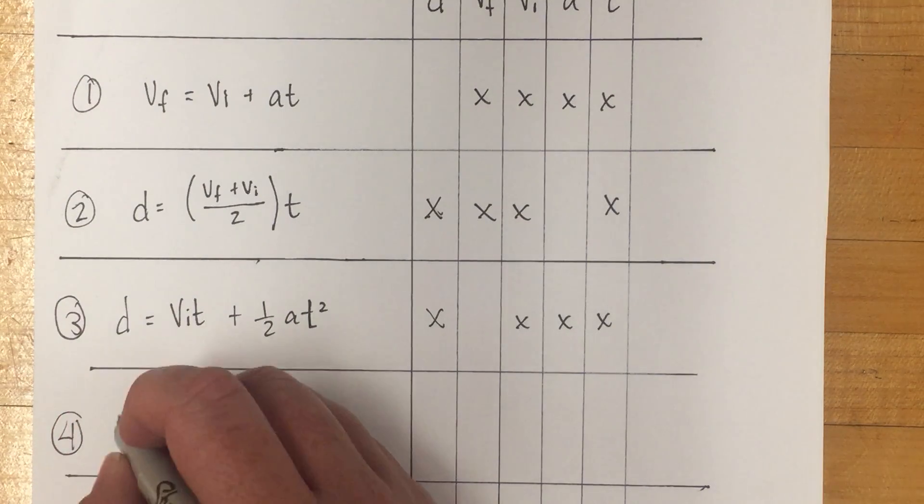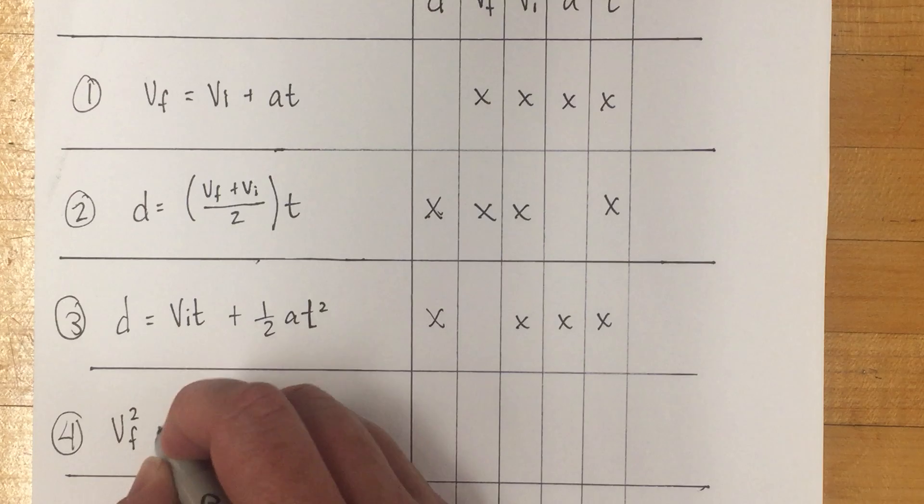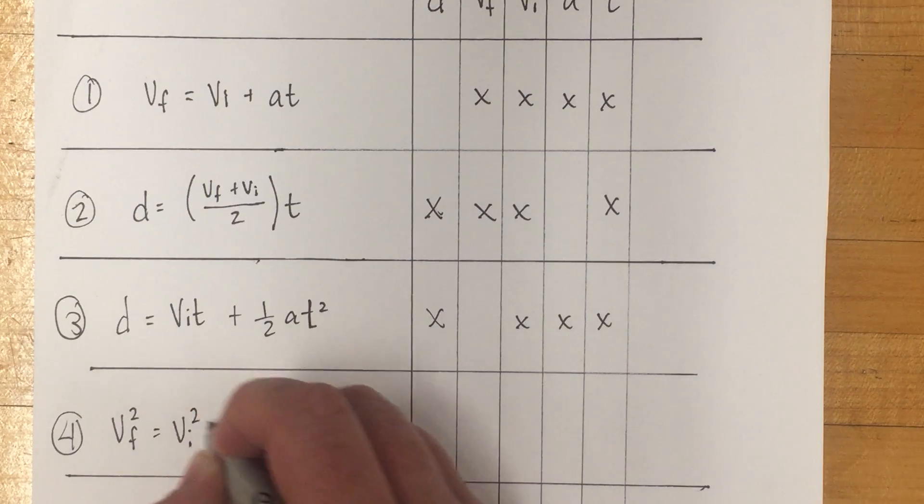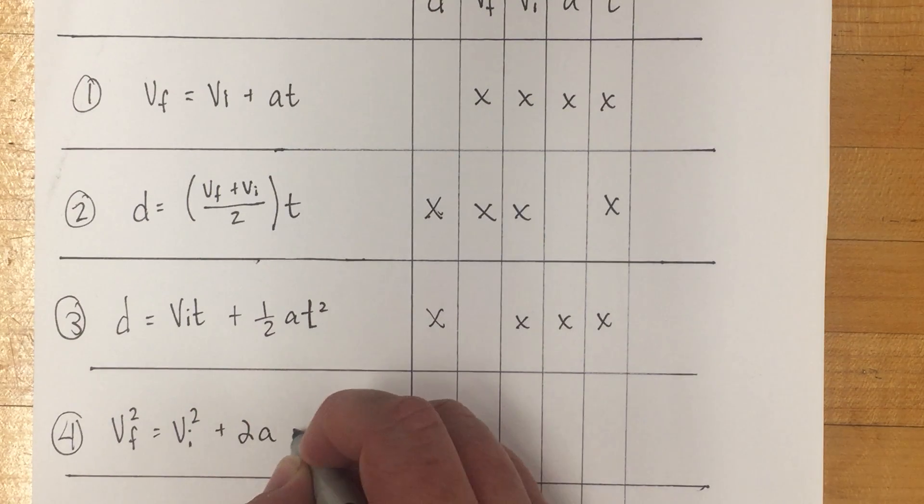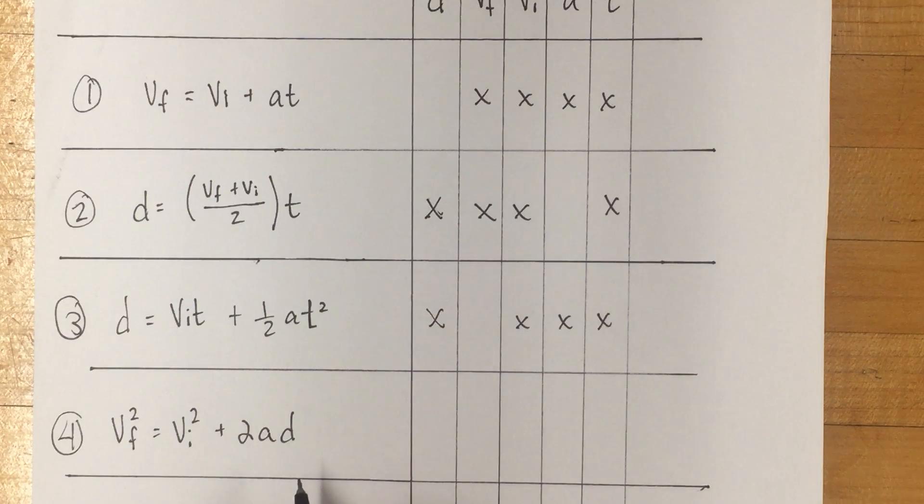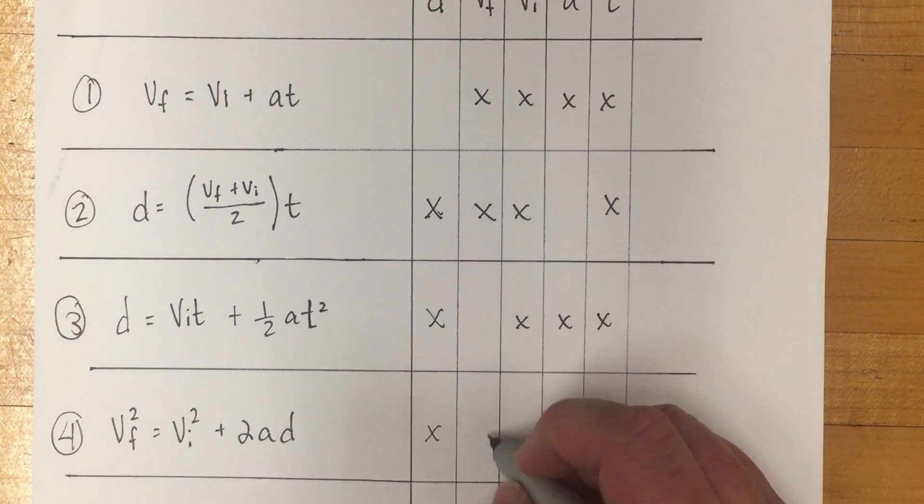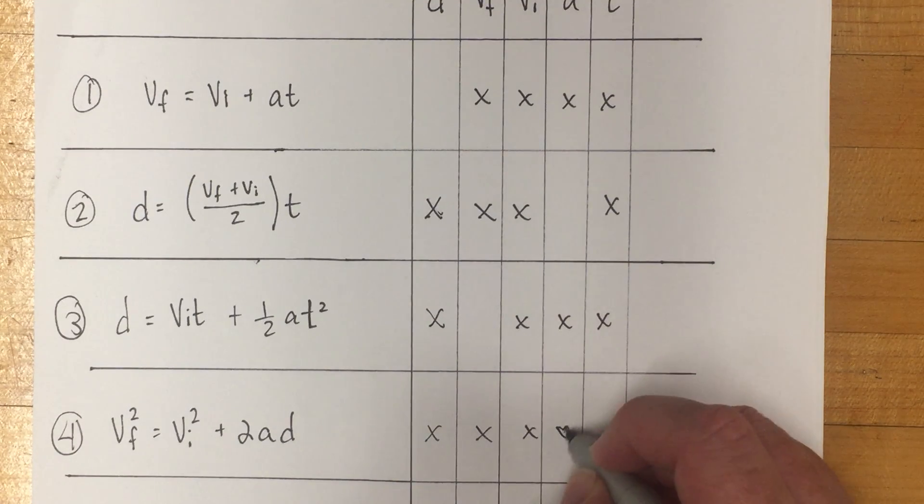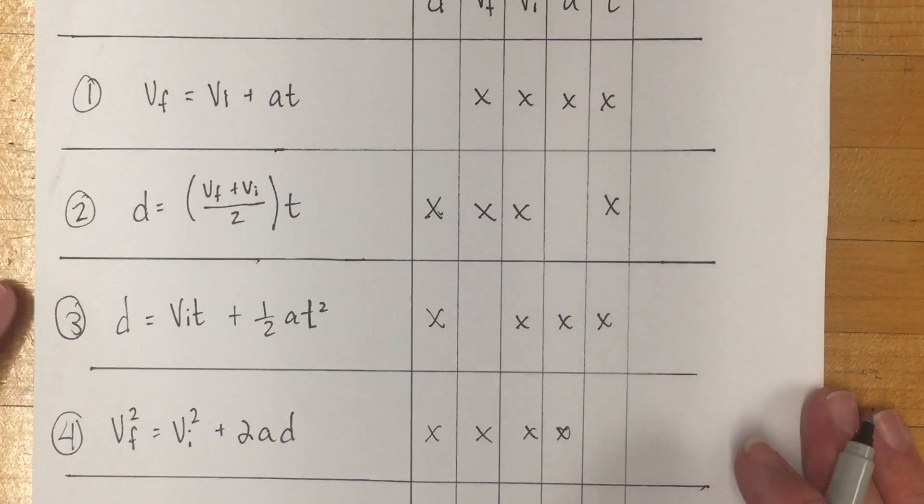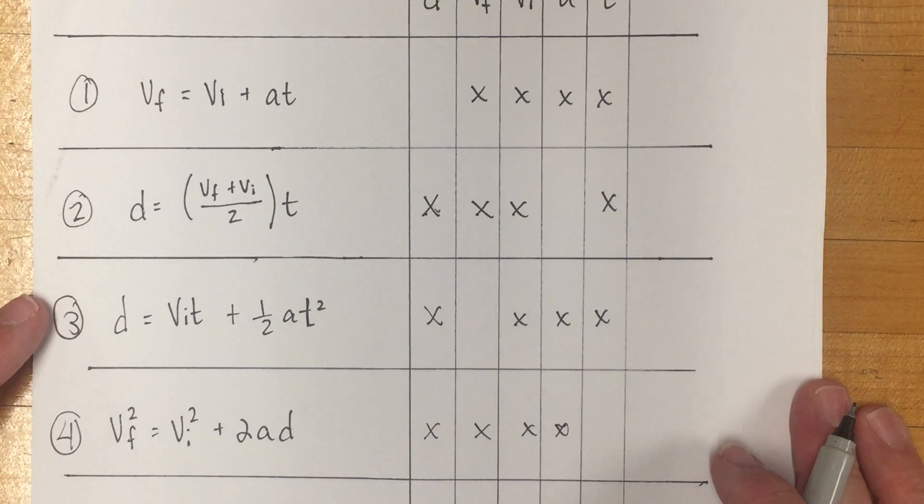And then four, the fourth one we have is vf squared equals vi squared plus 2ad. This is one you'll use if you don't have the time. You know your final velocity, initial velocity, acceleration, and distance. It has distance, vf, vi, and a, and it's the only one that you can solve if you don't know the time and you don't need to know the time.